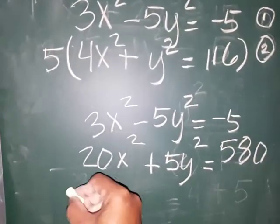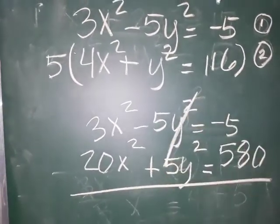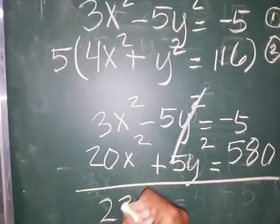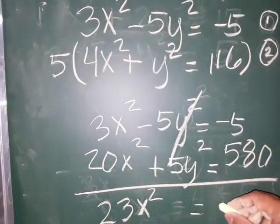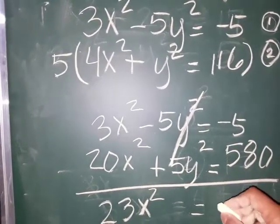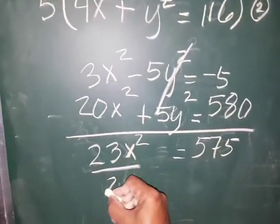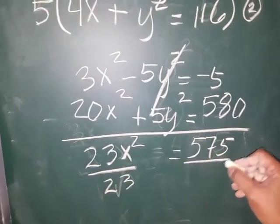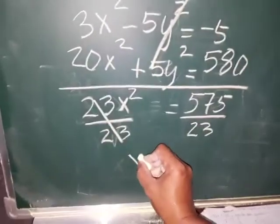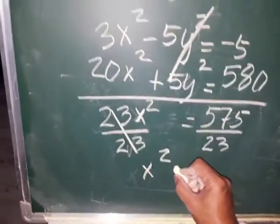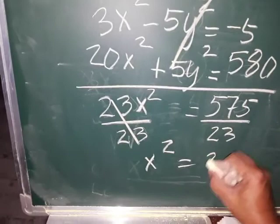Multiply 5 with equation 2: 5 times 4x squared is 20x squared, plus 5 times y squared is 5y squared, and 5 times 116 is equal to 580. Now add. Since they have the same coefficient but unlike sign, cancel the y terms. Then 20 plus 3 gives 23x squared is equal to 580 minus 5. They are unlike signs, so subtract: 575 divided by 23 equals 25.